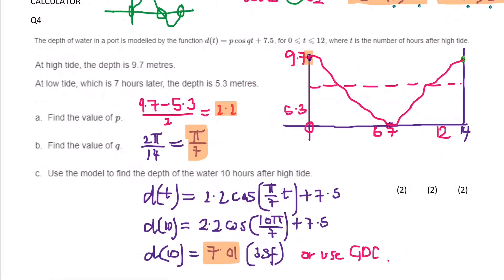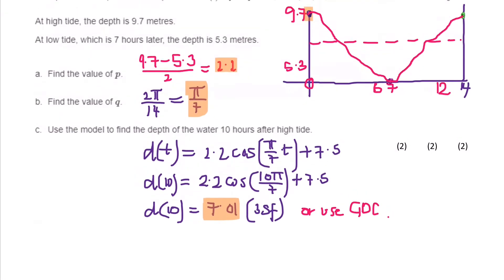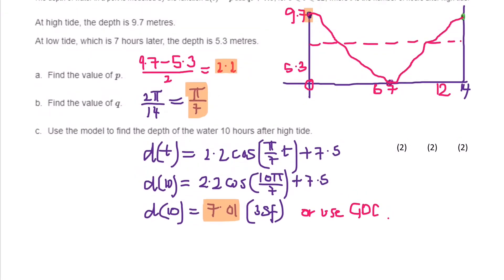On to calculator questions. It says the depth of water in a port is modelled by, so it gives us the function, it gives us the domain. It tells us that t is the number of hours after the high tide. So at high tide, it's telling me the depth is 9.7. Well from here you've got to look, it's a cos function, and you don't know what p is yet. So you need to figure out whether it's positive or negative before you draw your graph.